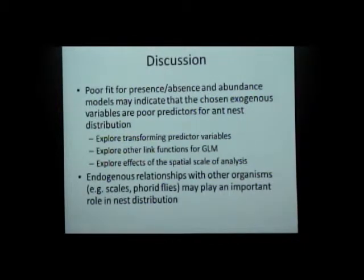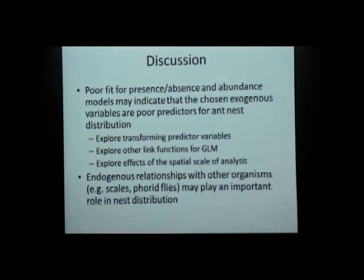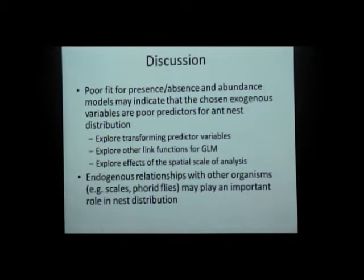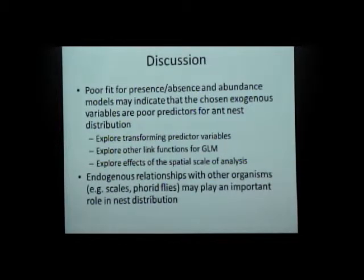This could mean I need to explore transforming the predictor variables I used, or I might need to try other link functions for the generalized linear model. I might also just be looking at the system at the wrong spatial scale. Alternatively, this could mean that the endogenous relationships — the ecological relationships between the ant and other parts of the agroecosystem — may play a more important role in determining where these nests are distributed than the environmental variables.